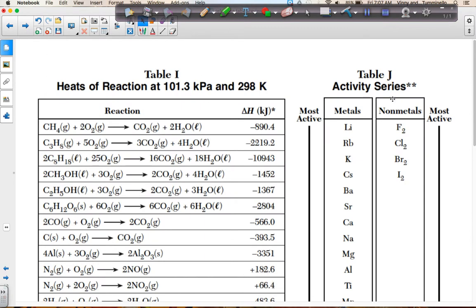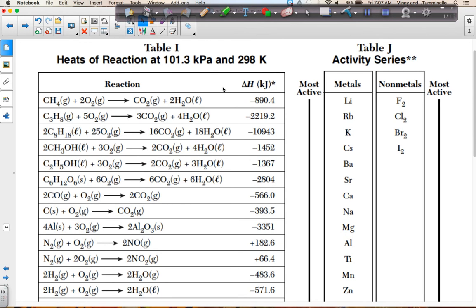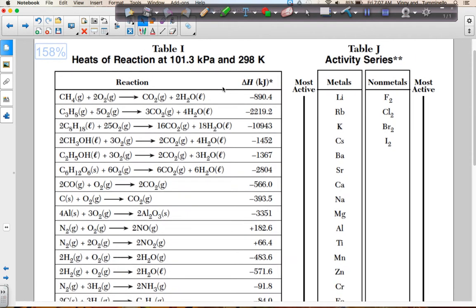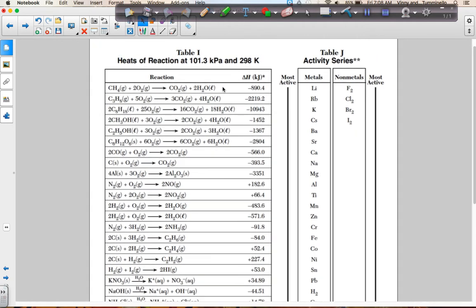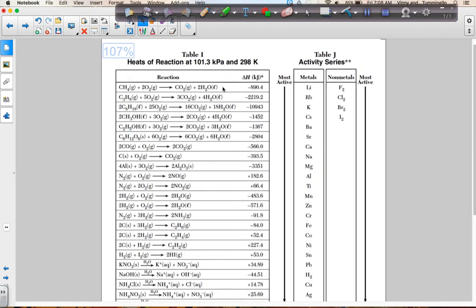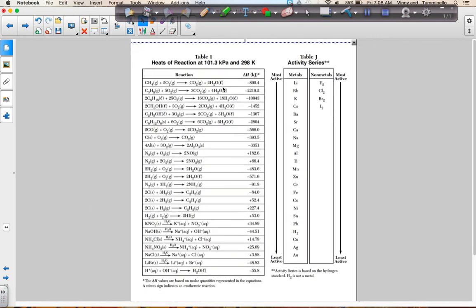Moving on to table I. Table I tells us the heats of reaction at 101.3 kilopascals and 298 Kelvin for different reactions. And if we look at all of table I at once, we have certain divisions within table I.